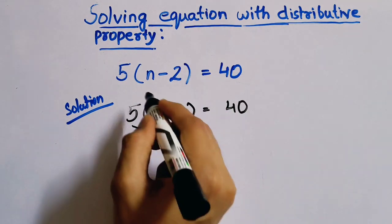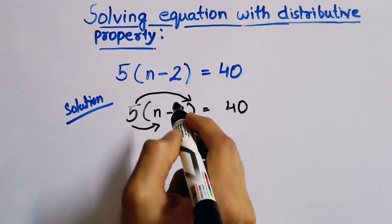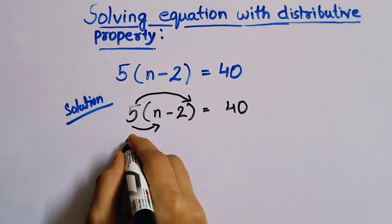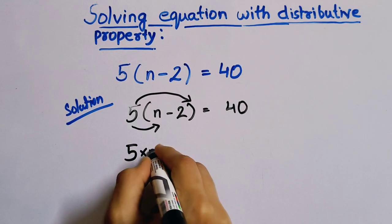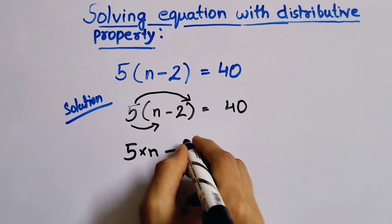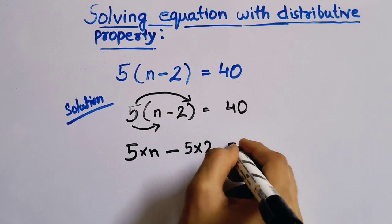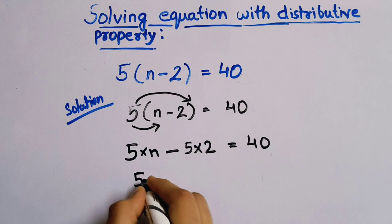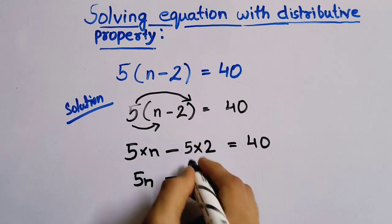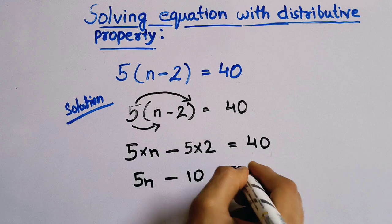First we will multiply 5 with n and 5 with 2. So first we will multiply 5 into n minus 5 into 2, equals to 40. So we will have here 5n minus 5 into 2, 10 equals to 40.